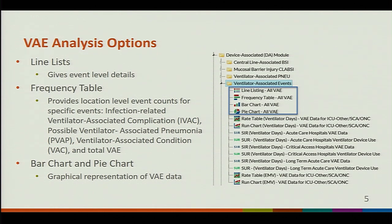The line list option will provide a detailed look at your events for that specific HAI type. The VAE analysis list will also provide details of that specific type of VAE event — it may be infection-related ventilator associated complication (IVAC), ventilator-associated condition (VAC), or a possible ventilator-associated pneumonia or PVAP event. The frequency table provides a visual representation of your location-specific event counts for that event type. One important thing to note is the option to see the events that contribute to the total VAE count.